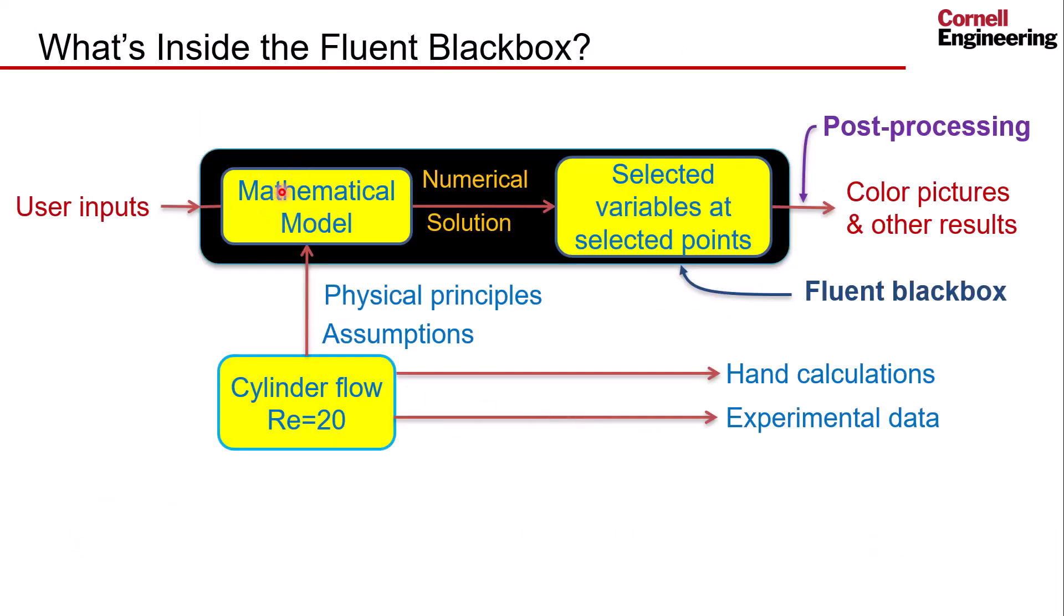If I go into my framework of what's inside the black box, we have a physical problem: cylinder flow at a Reynolds number of 20. We're going to give user inputs to the black box, and based on the user inputs, the Fluent black box will determine the mathematical model and solve it numerically to get selected variables at selected points.